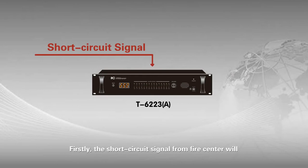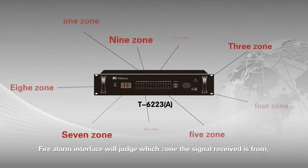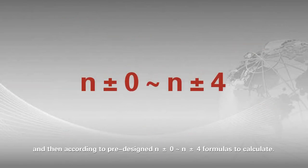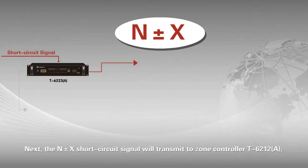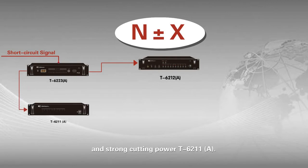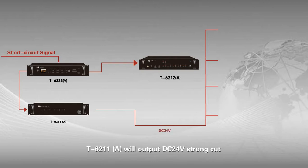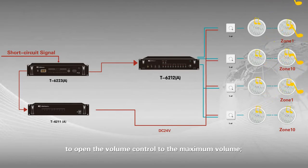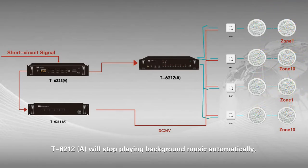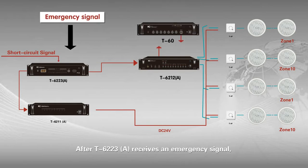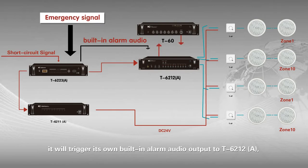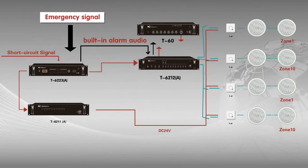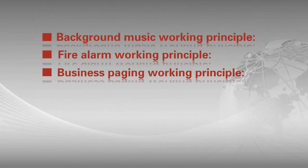Fire alarm working principle. The short-circuit signal from the fire center accesses fire alarm interface T6223A. The interface judges which zone the signal is from, then calculates according to the pre-designed N±0 to N±4 formulas. The N-X short-circuit signal transmits to zone controller T6212A and strong-cut power T6211A. T6211A outputs DC 24V to open the volume control to maximum. T6212A stops background music and switches to the fire paging amplifier circuit. T6223A triggers its built-in alarm audio output to T6212A, which outputs to the fire paging amplifier so the corresponding drones broadcast emergency voice.